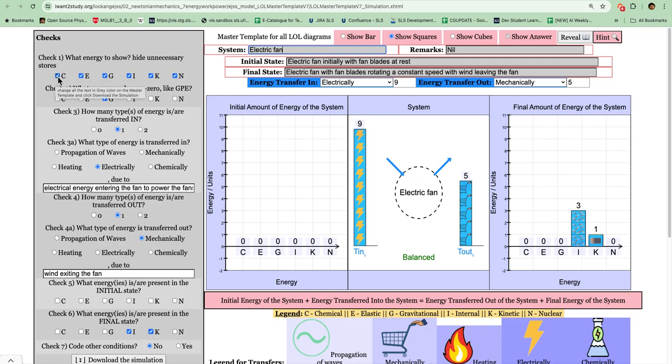This is to allow scaffolding of the concept because the original AOL has six energy stores. So you may want to remove the unnecessary ones. So for example, you may want to remove the chemical, the elastic energy, the nuclear to scaffold it. Maybe even the gravitational if you do not want.